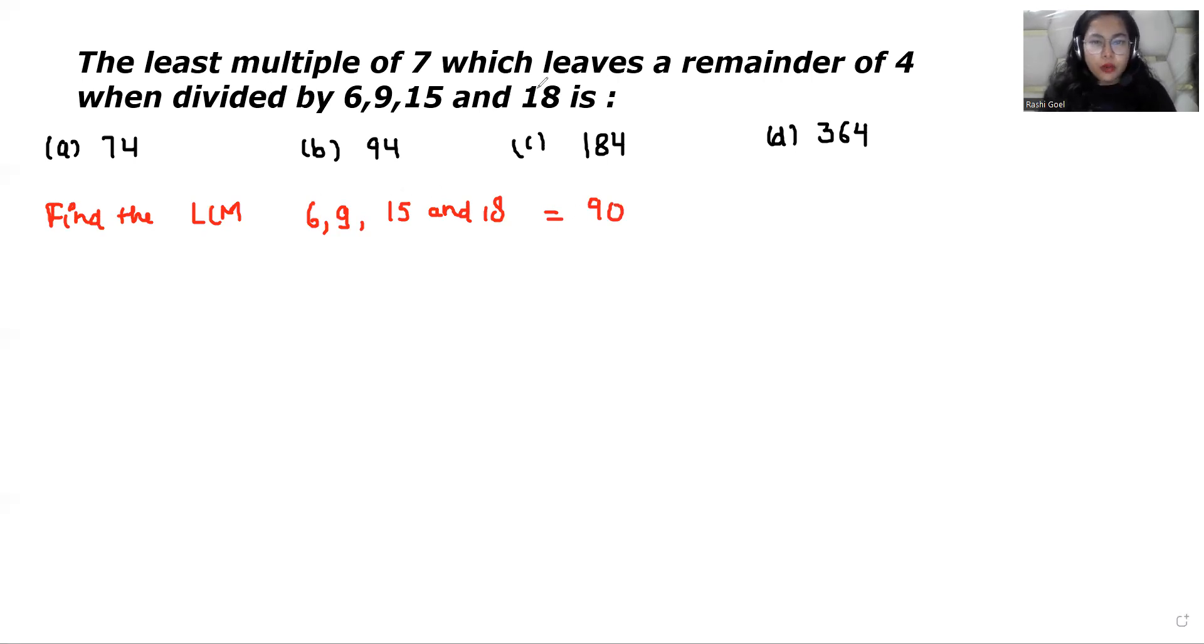According to the question, it leaves a remainder of 4. So for getting the remainder 4, we need to add 4 to this number. The number becomes 90 plus 4, that is 94.